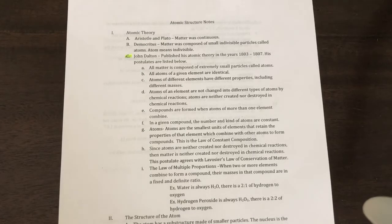Just because you're reacting something doesn't mean that it's going to change the atoms themselves. Compounds are formed when atoms of more than one element combine. In a given compound, the number and kind of atoms are constant. Atoms are the smallest units of elements that retain the properties of that element which combine with other atoms to form compounds. This is called the law of constant composition.